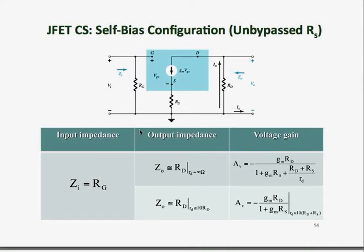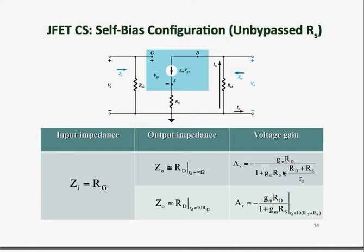With the AC equivalent circuit for the un-bypassed source resistor configuration, the input impedance is just the gate resistance RG. Looking from the output side with VIN off, the current source becomes an open circuit, so the output impedance is just RD, the drain resistance. The voltage gain formula is more complicated due to the presence of the un-bypassed source resistor; the derivation is in the textbook. The key point is that the voltage gain still has a negative polarity, meaning the output is 180 degrees out of phase with the input.